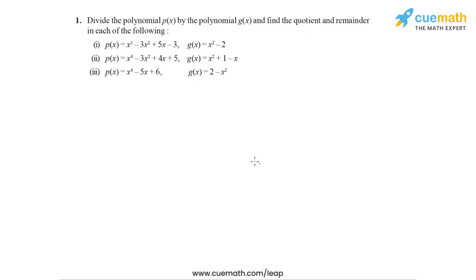In question one of this exercise we have to divide the polynomial p(x) by the polynomial g(x) in each case. There are three parts and in each part we have to find the quotient and the remainder. We are going to use the long division process applied to polynomials.